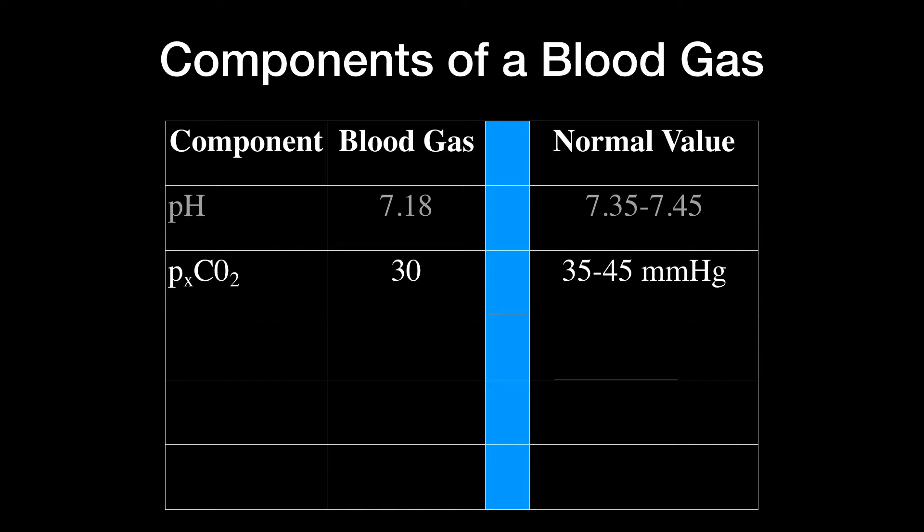The next value of a blood gas reported is the PXO2. I say X because it depends on what type of blood gas you've obtained to tell you what the partial pressure of oxygen is. In this case, we can assume it's an arterial blood gas, so you can say P little aO2. And if you remember the blood gas that we read, it was 92. Now what's the normal value of a P little aO2? It actually totally depends. Let's go in more detail into this.